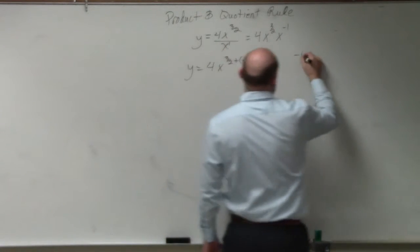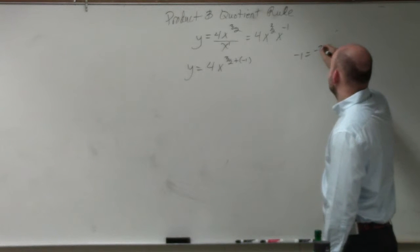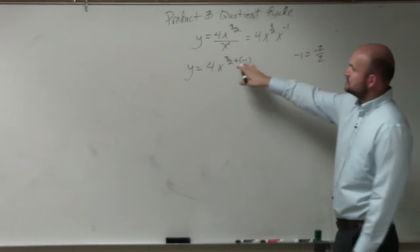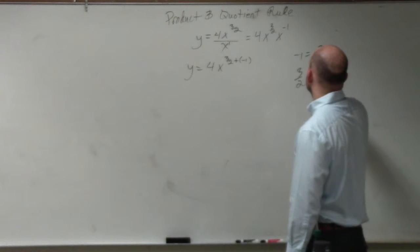Well, negative 1 is equal to a negative 2 over 2. So if I add 3 halves plus negative 2 over 2, I get 1 half.